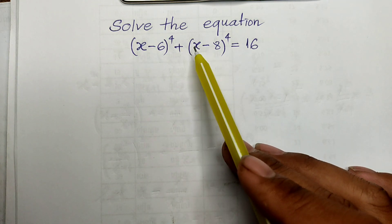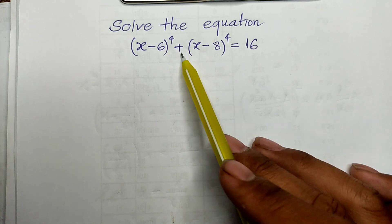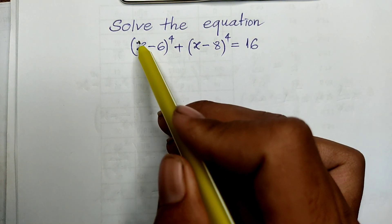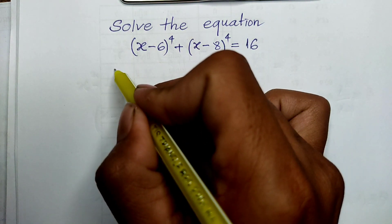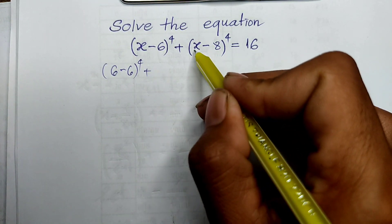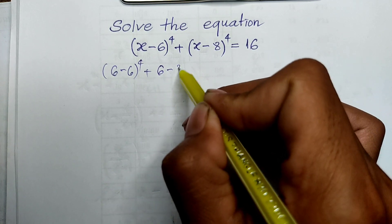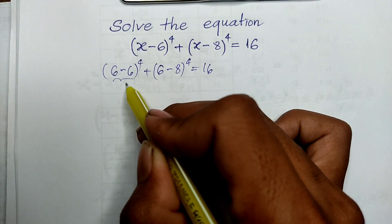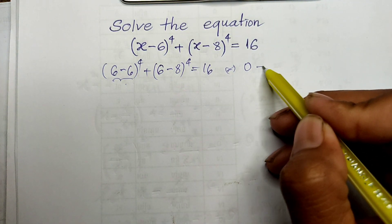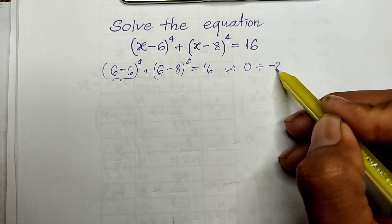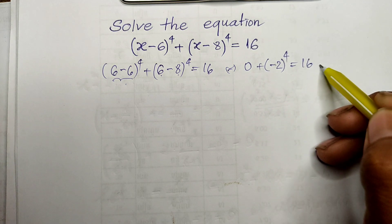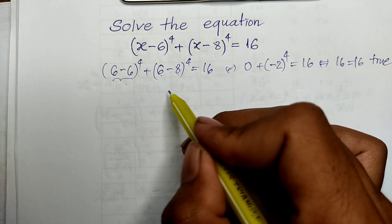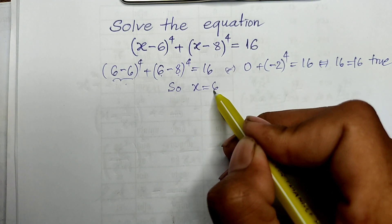Our equation is (h minus 6) to the power 4 plus (h minus 8) to the power 4 equals 16. If I replace h by 6, we get (6 minus 6) to the power 4, which is 0 to the power 4, equal to 0. And (6 minus 8) is minus 2, and minus 2 to the power 4 is 16. So 0 plus 16 equals 16, which is true. So h equals 6 is a solution.